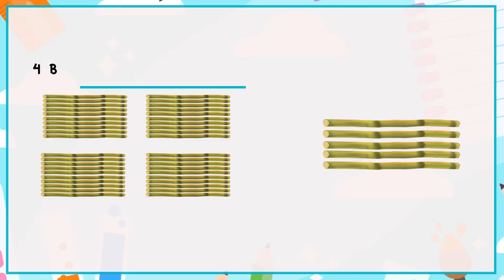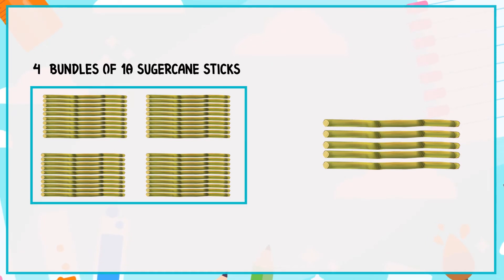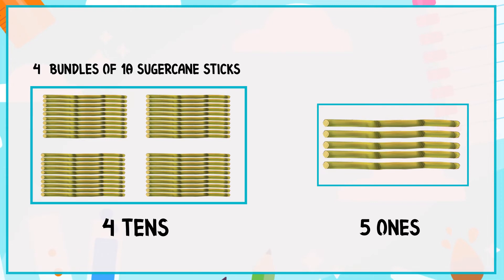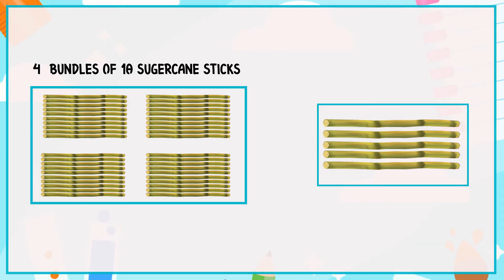These are 4 bundles of 10 sugarcane sticks in each, so it is 4 tens and these are 5 ones. So, 4 tens and 5 ones is equal to 45.